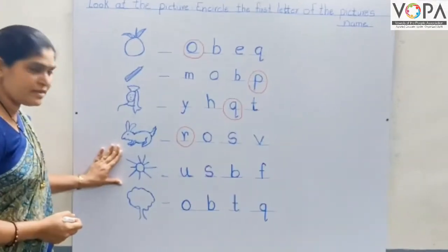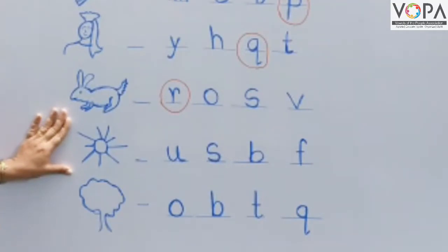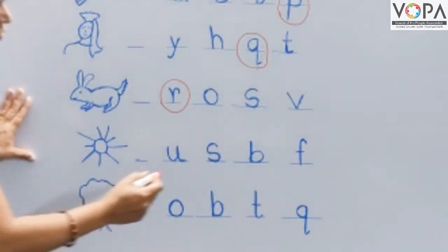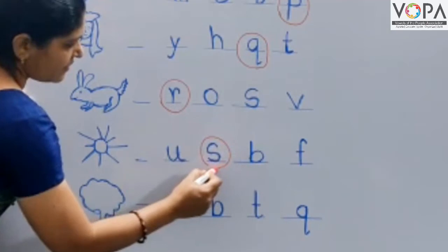What is this? This is a sun. S for sun. S-U-N, sun. The first letter of sun is S. So circle round the letter S.